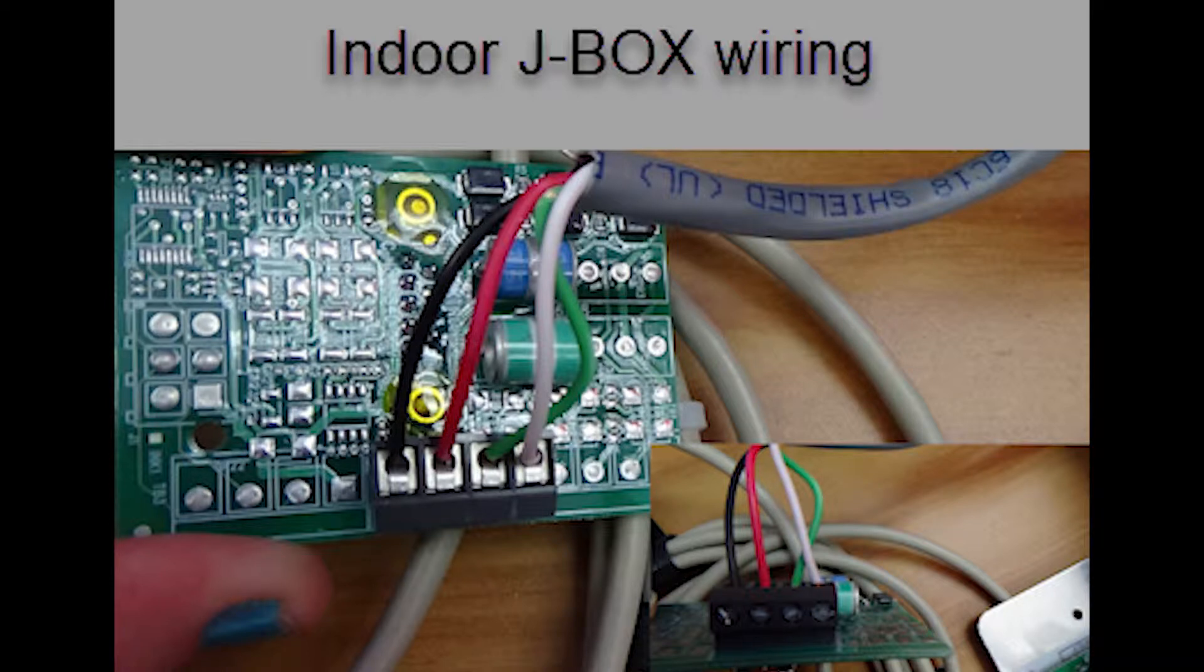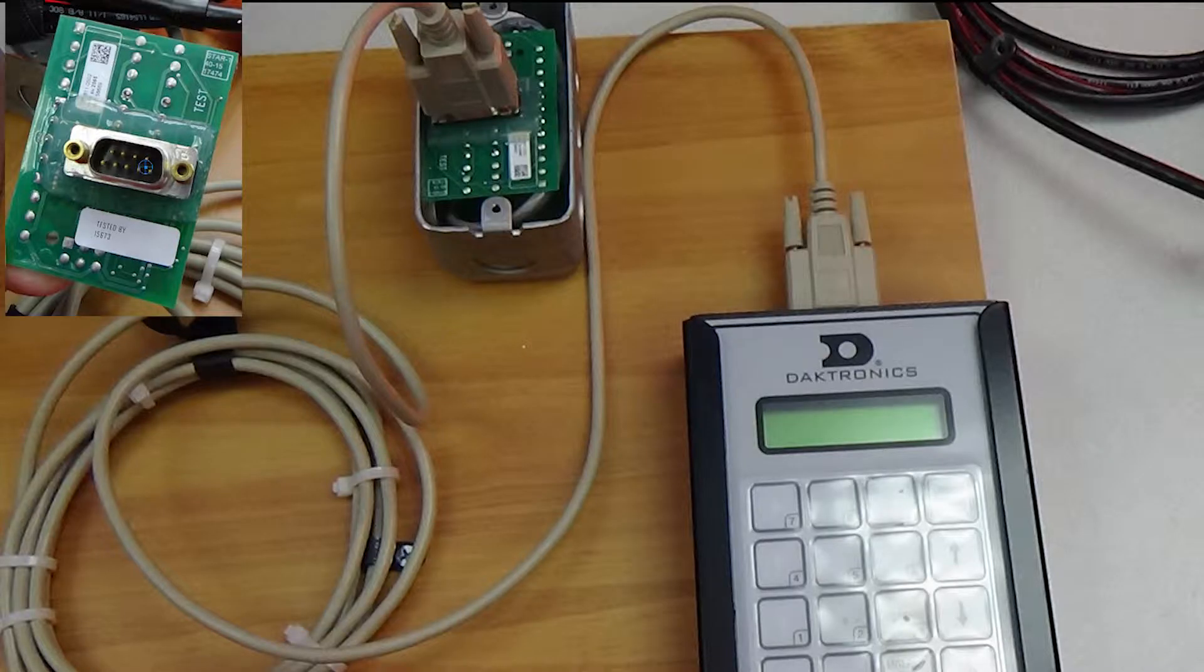The actual wire color run from building to pylon and from pylon to pylon may vary as it will depend on where the installer sources the cable. Put the card back into the J-Box and then screw the faceplate onto the J-Box. This is where the DM100 will connect to when updating from inside.